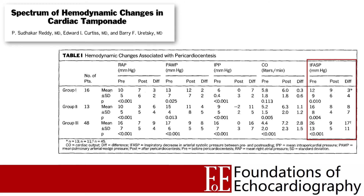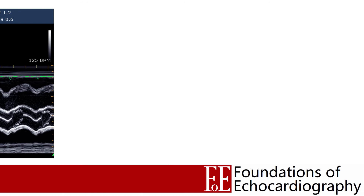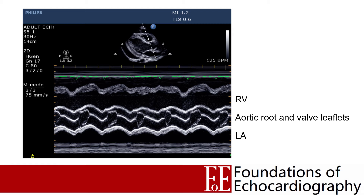We can observe pulsus paradoxus using 2D echo with M-mode across the aortic valve in the parasternal long axis. We can see aortic valve opening and closing across the cardiac cycle, and observe how the degree and duration of valve opening varies beat to beat — reduced valve opening reflects the reduction in LV stroke volume and blood flow across the valve during inspiration. This was an extreme case and it was evident the patient required urgent pericardiocentesis even without this sign, but it illustrates how flow changes can be demonstrated with basic Level 1 tools.